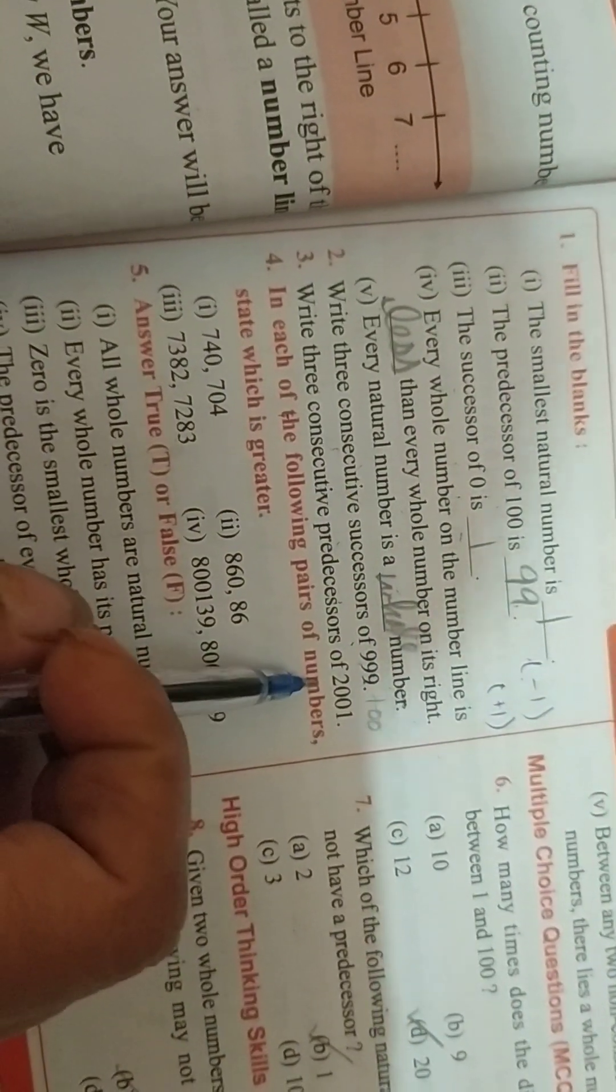Similarly, you can do predecessors. You will do minus 1. 2001 minus 1, 2000. And then subtract minus 1 from 2000, and then subtract minus 1 again, the number.